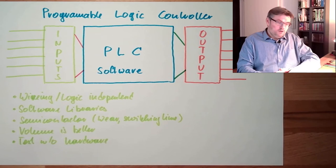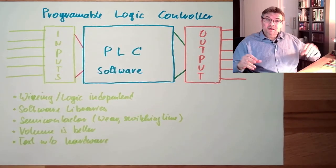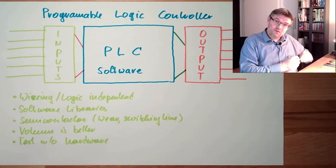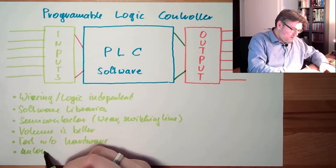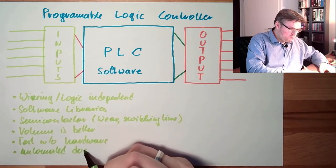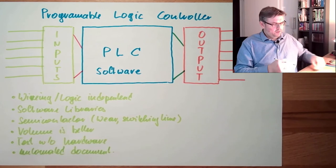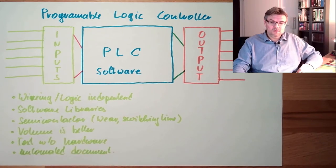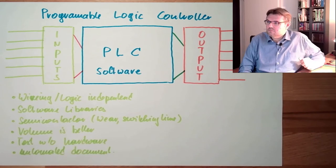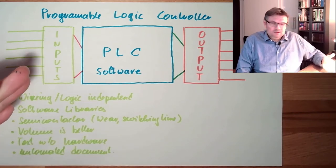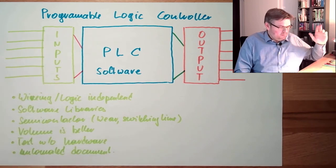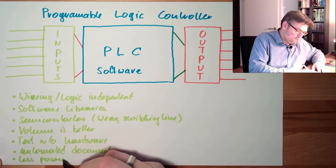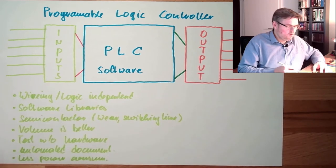Documentation. A lot of documentation can be, if the program is written the correct way, automatically generated, including output lists, variable lists, logics, and so on. Automated documentation. Also big benefit, if I always have to redraw the wiring, there is a lot of manpower inside. Also, power consumption. Less PLC, less power consumption.